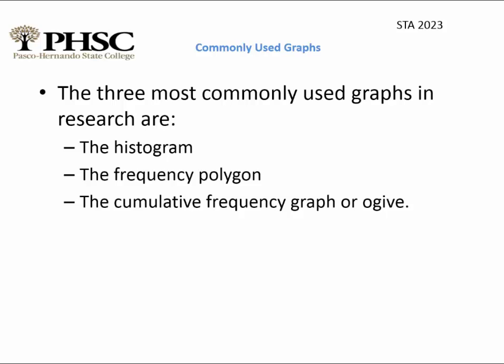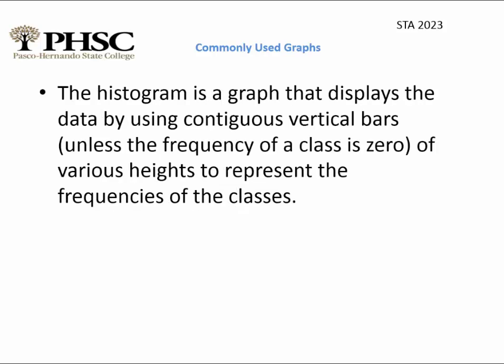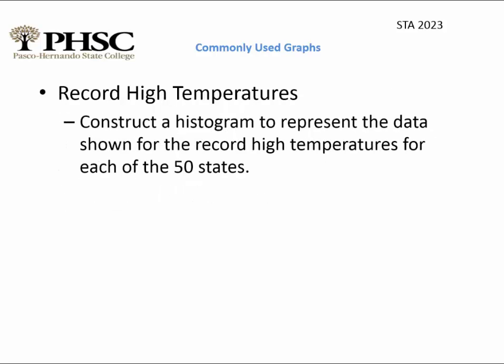Some of the most commonly used graphs are the histogram, the frequency polygon, and the cumulative frequency graph. A histogram is simply a graph that displays data by using contiguous vertical bars. Unlike a bar graph, which can have spaces between bars, a histogram has no space — the data is continuous.